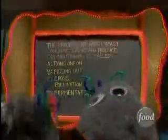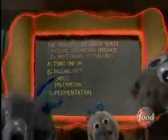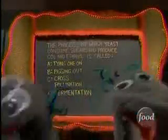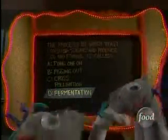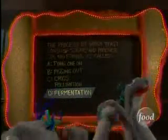Next question: The process by which yeast consumes sugars and produces CO2 and ethanol is called — A. Tying one on, B. Pigging out, C. Cross-pollination, or D. Fermentation. Why, that's right. The answer is D. Whether yeast is boosting bread or brewing beer, the process is called fermentation.